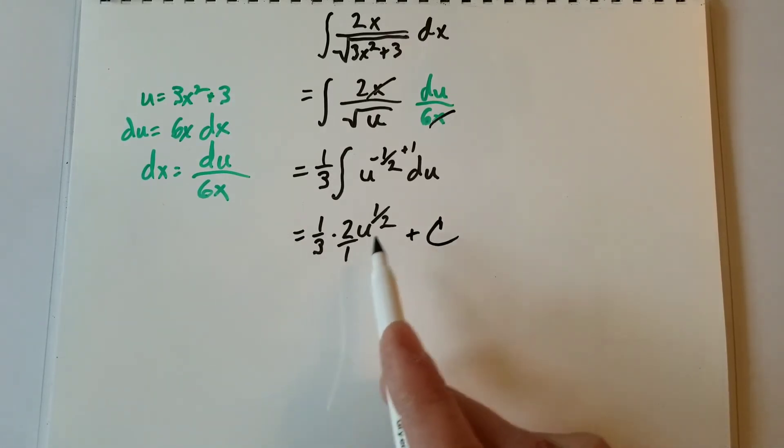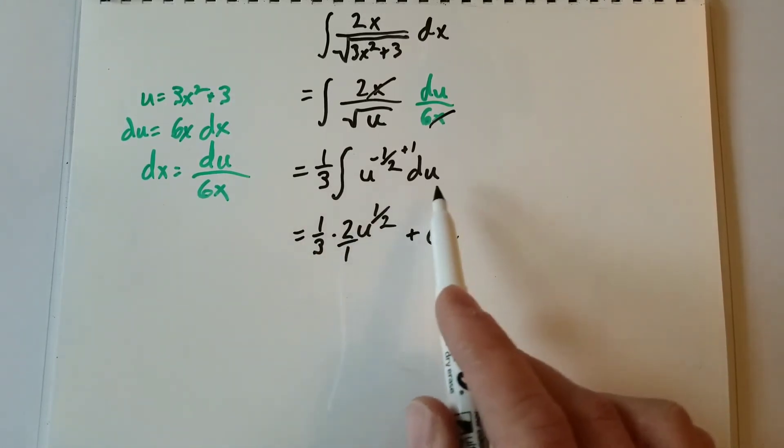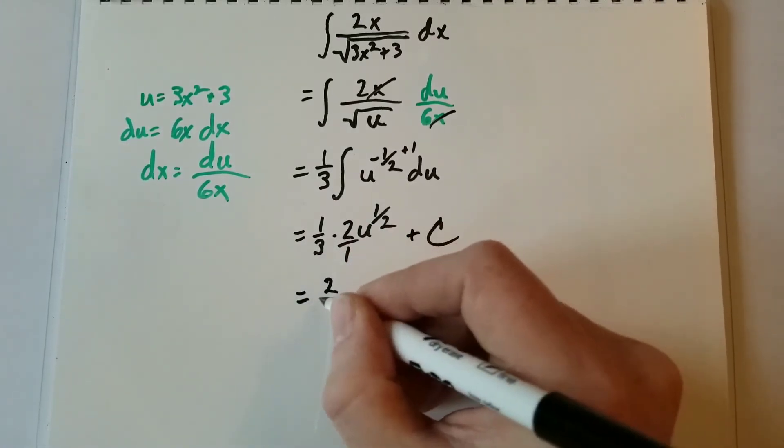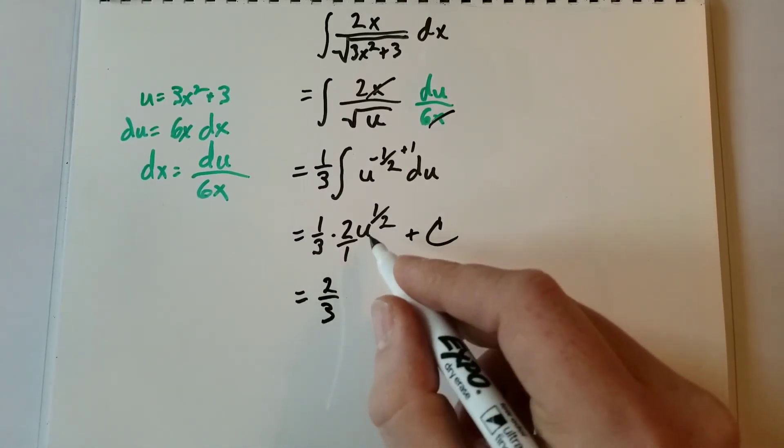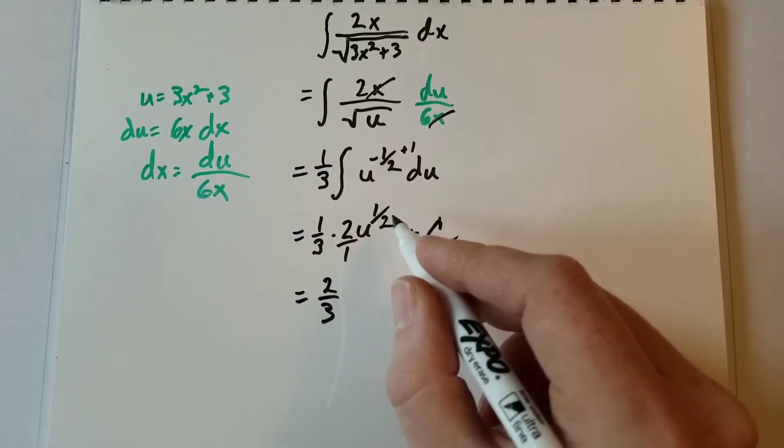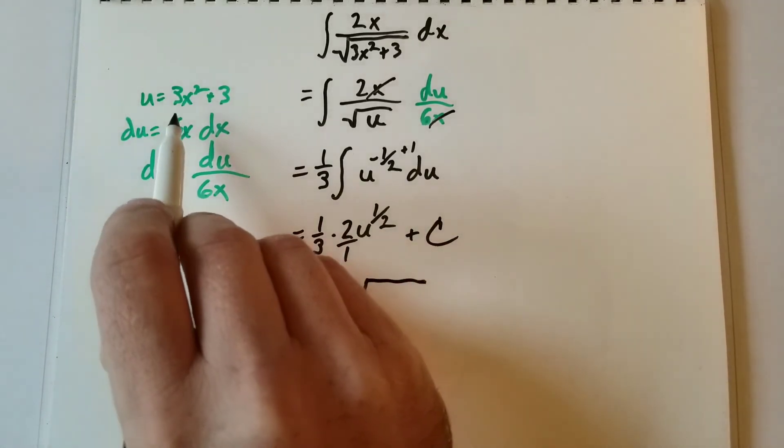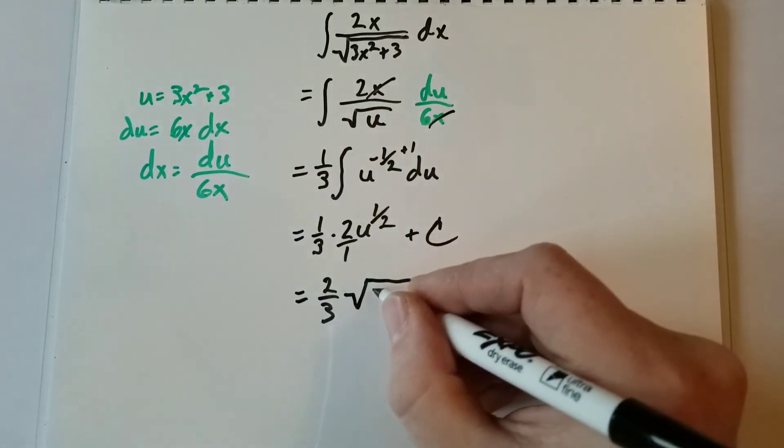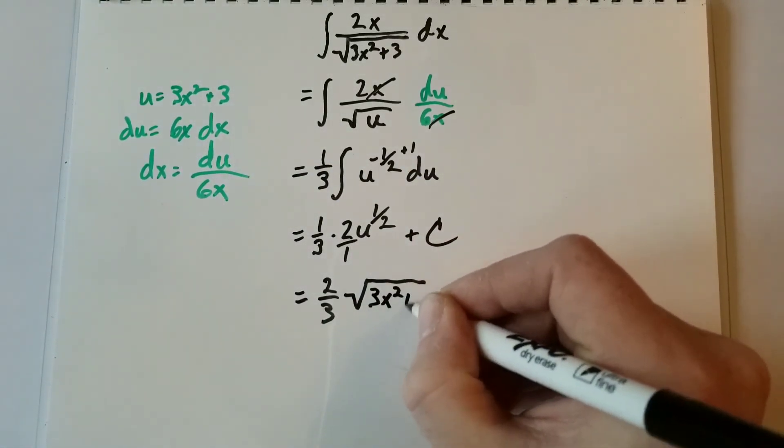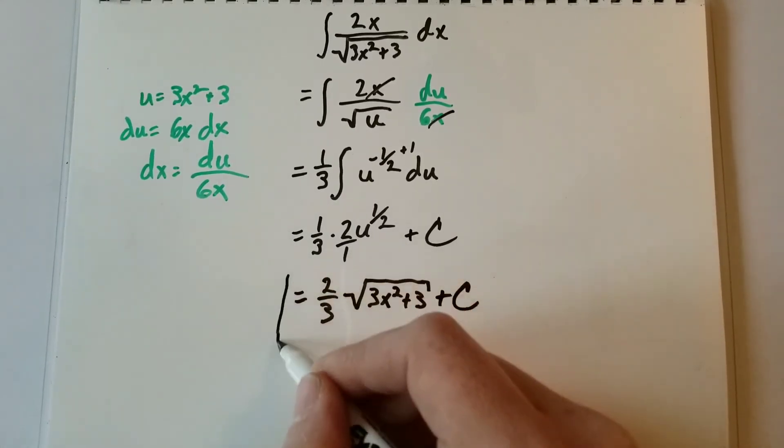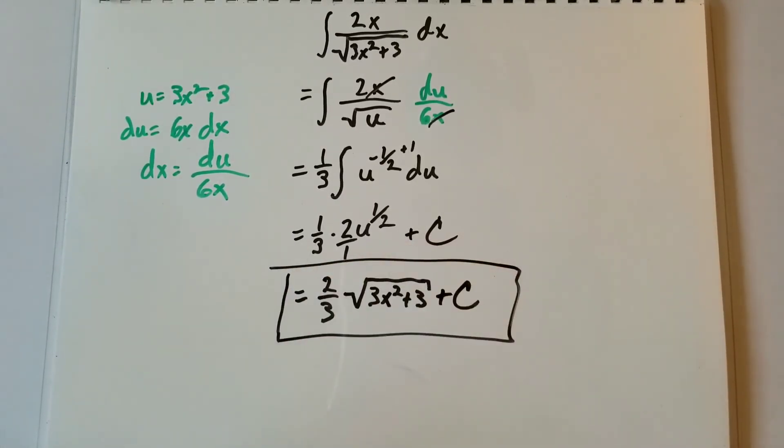Now all that's left is to clean this up and go back into the x world, because right now we're in the u world. So let's put our x back in. This will equal 2 over 3, and then u to the 1 half becomes the square root of whatever u was. And u was 3x squared plus 3. And we add our plus C. And that is the integral of 2x over the square root of 3x squared plus 3.